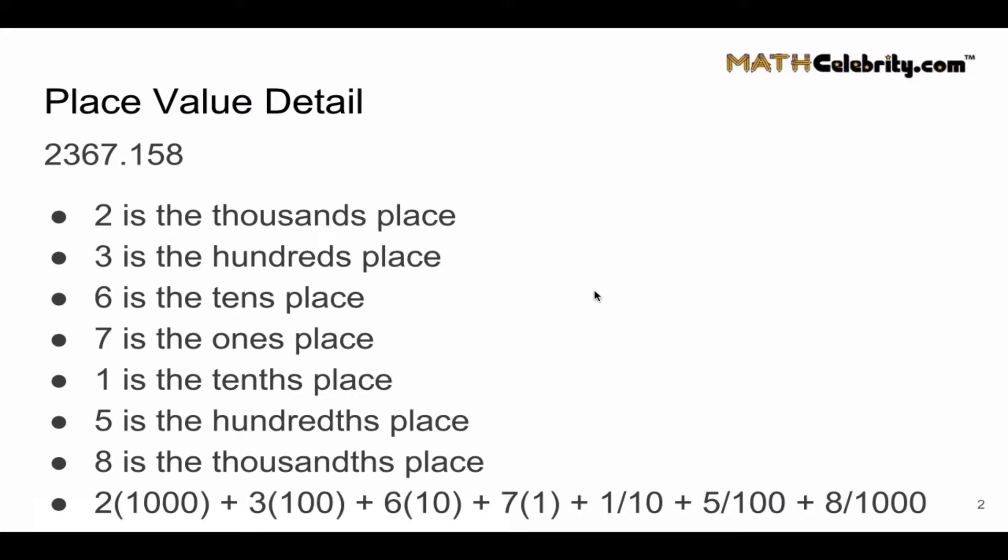And then once we get to the right of the decimal place, we start dividing. So 1 is the tenths place – really what we're saying is 1 divided by 10. 5 is the hundredths place, notice the TH. And finally, 8 is the thousandths place, so we're dividing by a thousand. If you work out this math and add it all up, you're going to get this number.